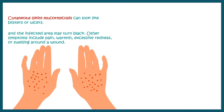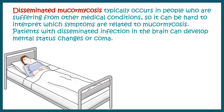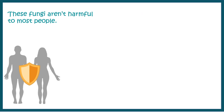There are other types such as pulmonary mucormycosis, whose symptoms include fever, cough, severe chest pain, and shortness of breath. Cutaneous mucormycosis involves skin infection with patches, blemishes, pain, warmth, and excessive redness. Gastrointestinal mucormycosis can cause severe abdominal pain, nausea, and gastrointestinal bleeding. The most severe type is disseminated mucormycosis, which typically occurs in people with multiple comorbidities such as diabetes, making it very difficult to track the cause.